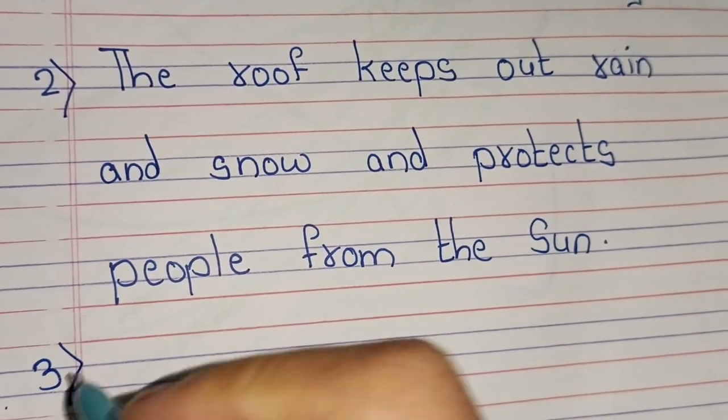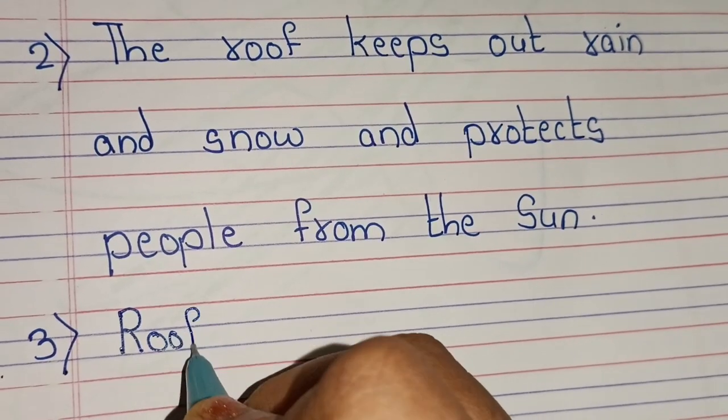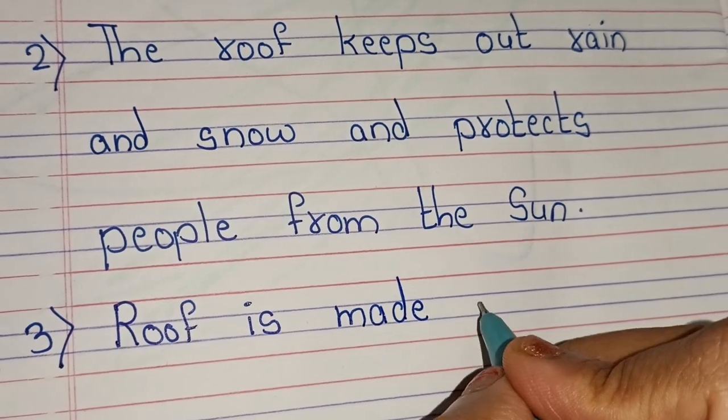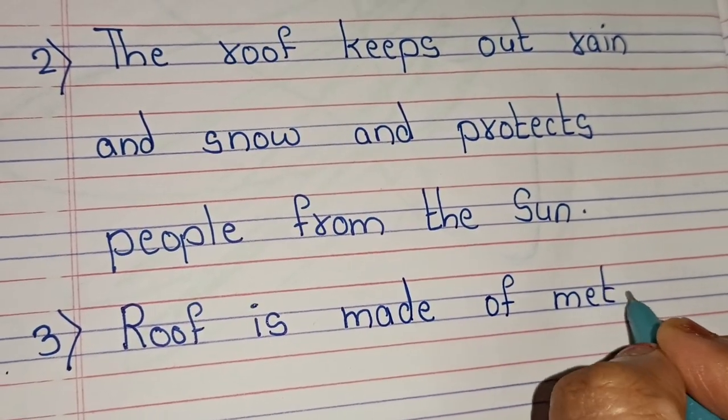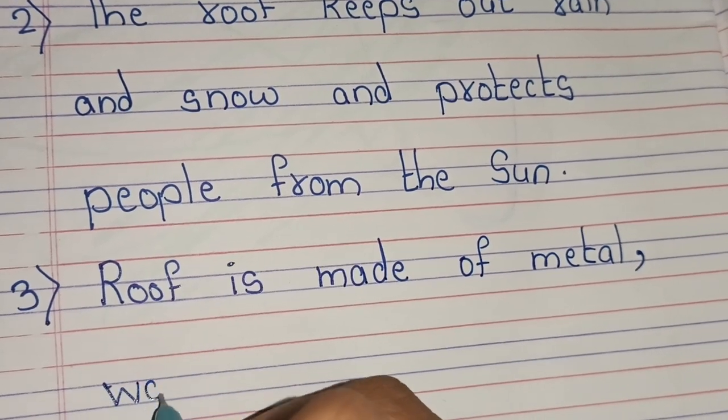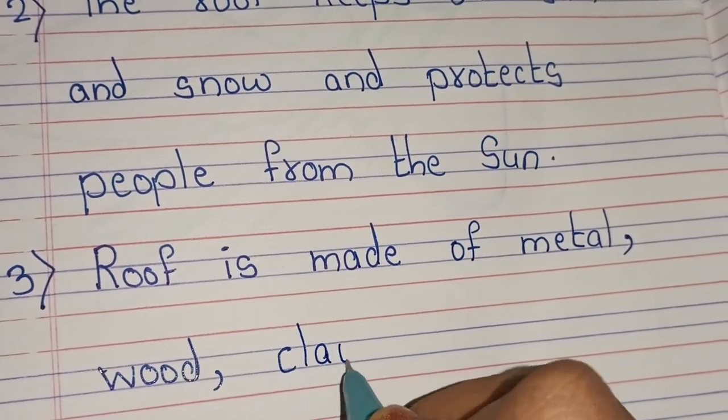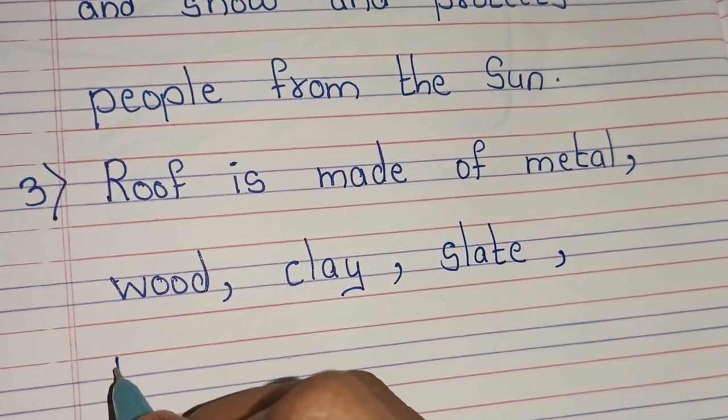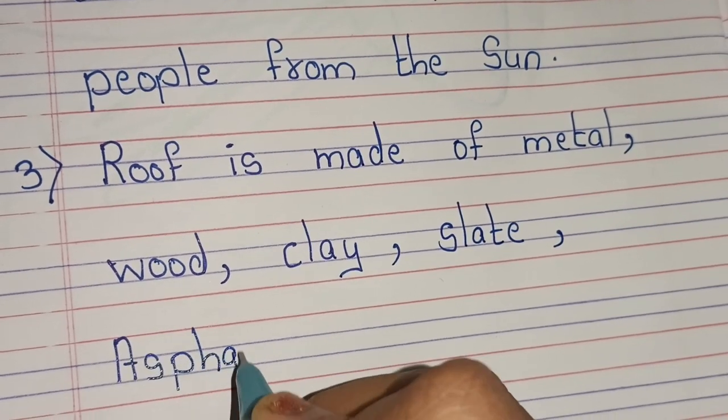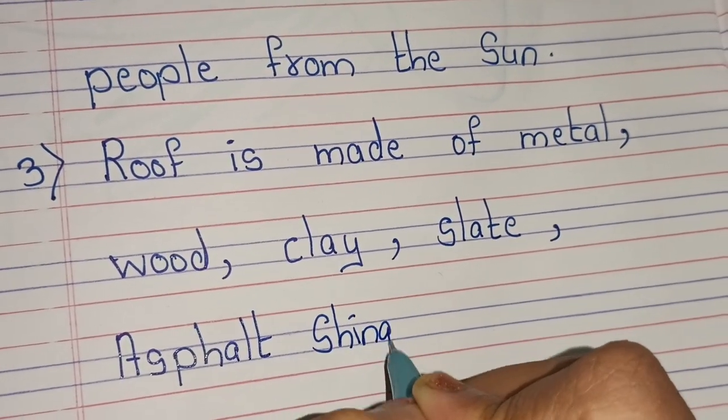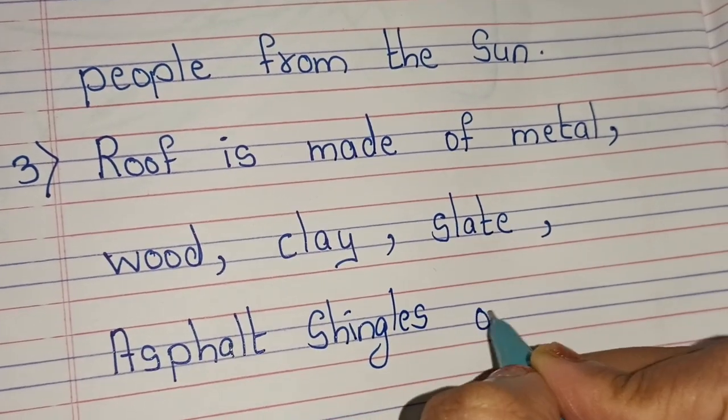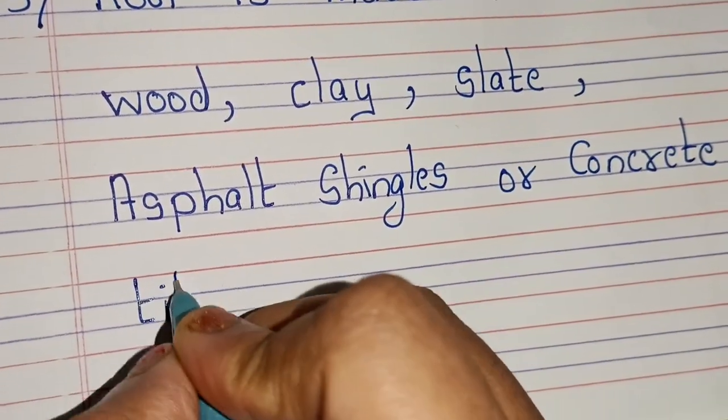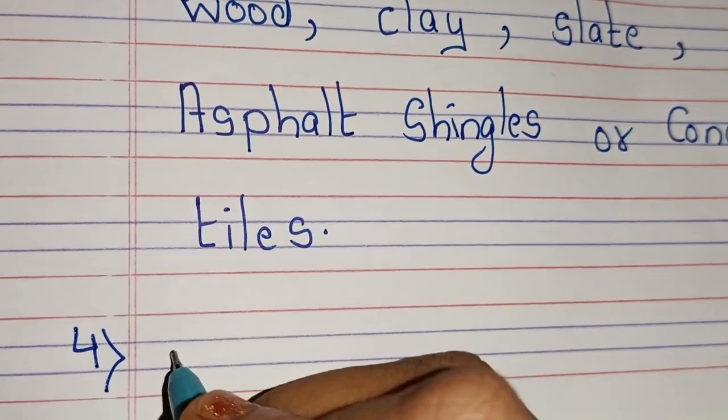Roof is made of metal, wood, clay, slate, asphalt shingles or concrete tiles. Point number 4.